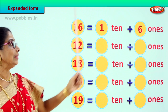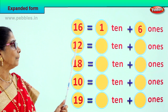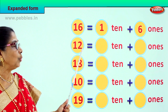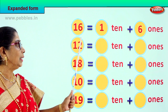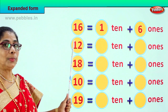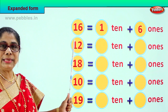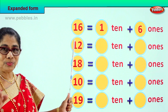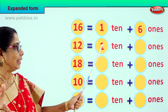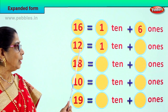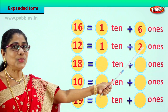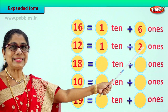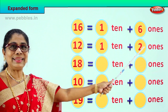Now let's take the next one. You have 12 here. Ones place, tens place. How many tens? 1 ten. How many ones? 2 ones. Excellent!